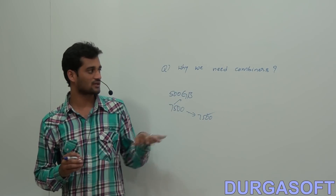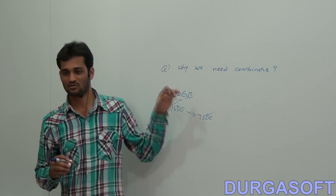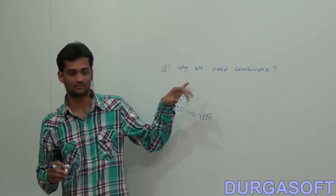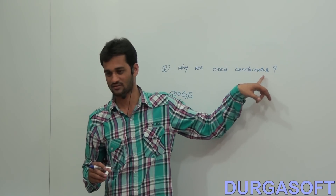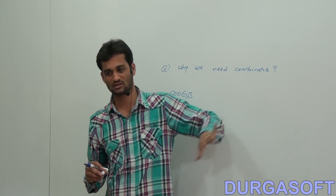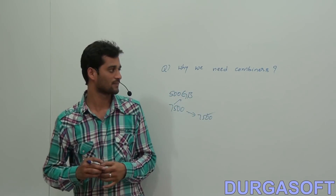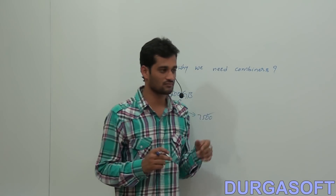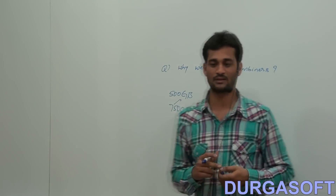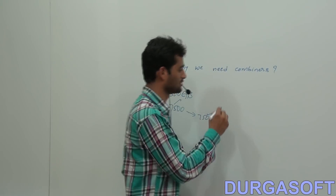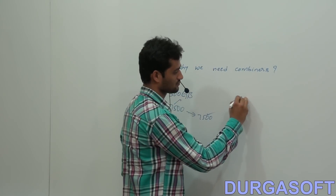So to increase that performance and to decrease that network traffic, we are working with combiners. Basically these combiners are mini reducers. A combiner is a mini reducer.